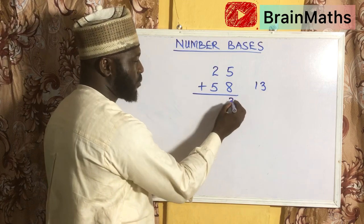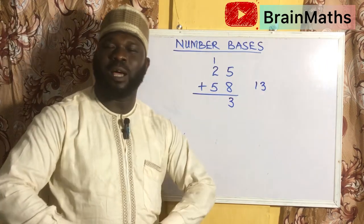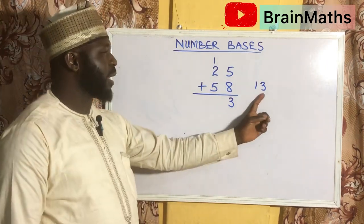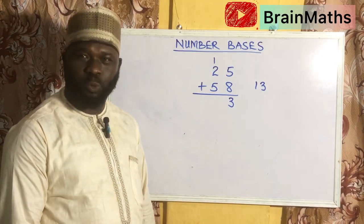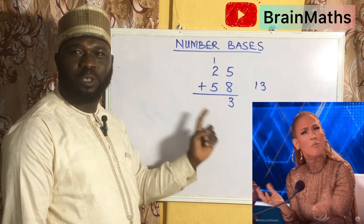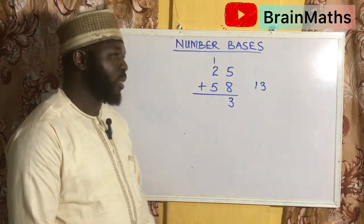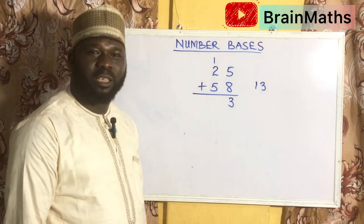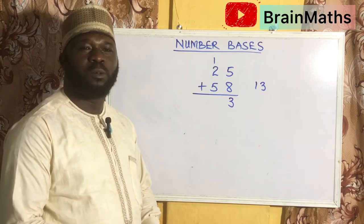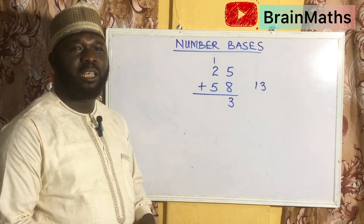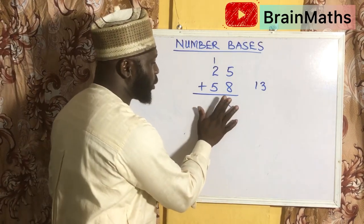Our teachers will tell us to write 3 and keep 1. Have you ever taken your time to ask your teachers that the remainder from 13 is actually 10 and not 1 — why are we keeping 1 instead of keeping 10? This is a great question we need to ask ourselves, and this is not a mistake, because the number system we use in the world for counting is in base 10.